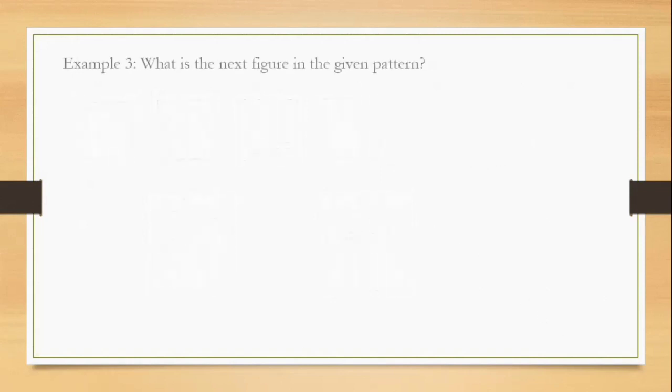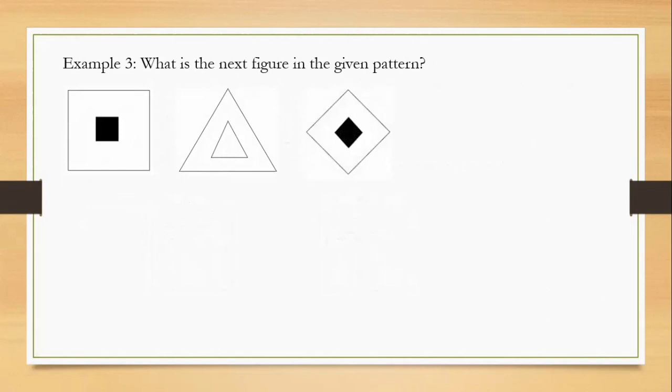Let's have example number three. What is the next figure in the given pattern? Again, observe the given figures. So we have that, next triangle. So what will be the next figure? You have here choices letter A and letter B. Try to observe. What is your answer? It's letter A.